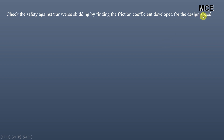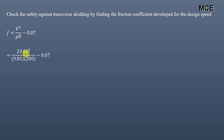We will check safety against transverse skidding by finding the friction coefficient developed for the design speed, taking the super elevation as 0.07. Using V²/GR = e + f, with e = 0.07, V = 23.61 m/s, and R = 200m, the coefficient of lateral friction works out to 0.21. But the safe limit of lateral friction given in the question is 0.15, and this value of 0.21 exceeds that limit.